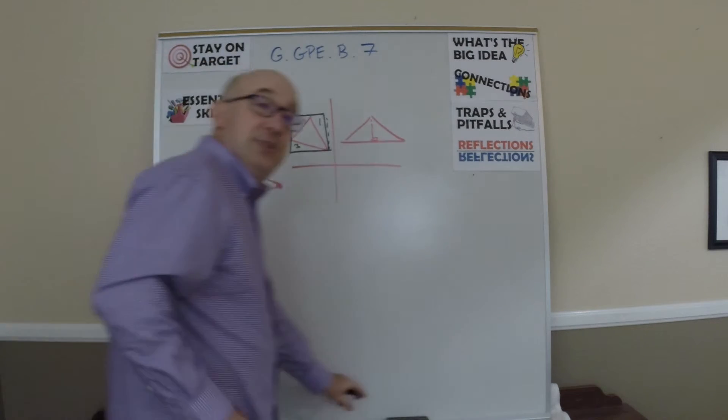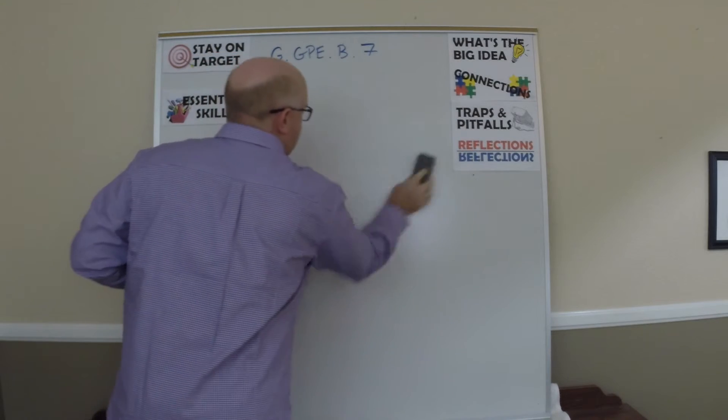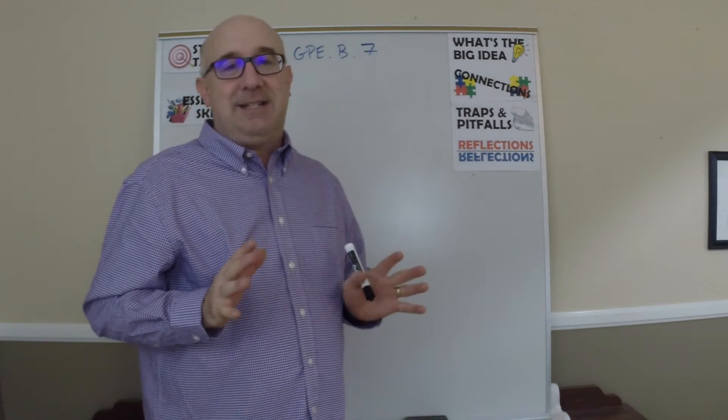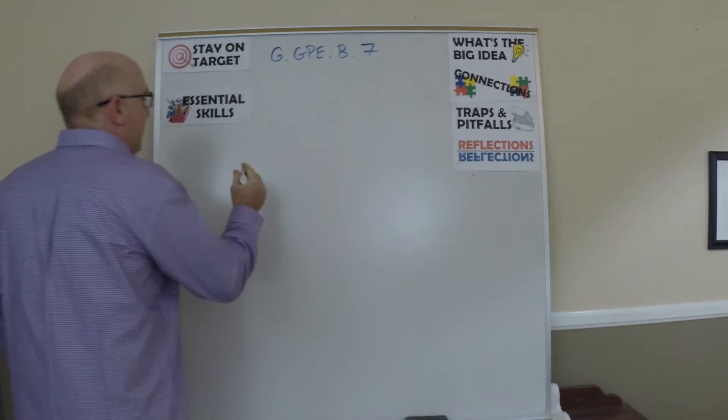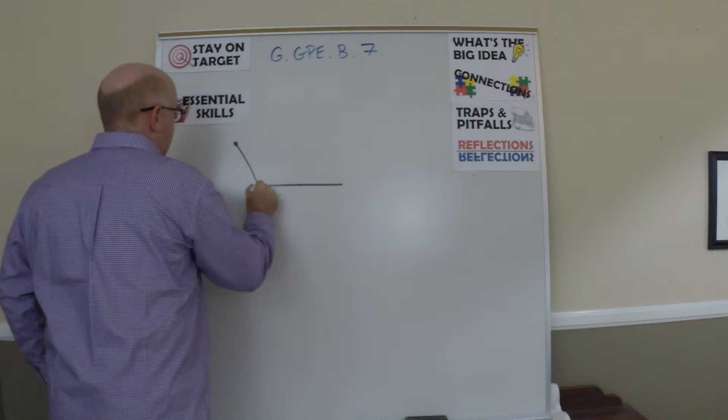The other technique is called shearing. Won't spend much time on it. It's a very cool technique that allows you to find area by changing the shape. Let me give you the basic idea of it. Here is a triangle here.